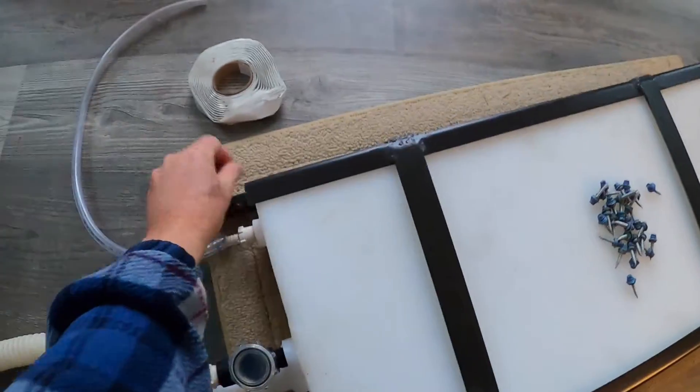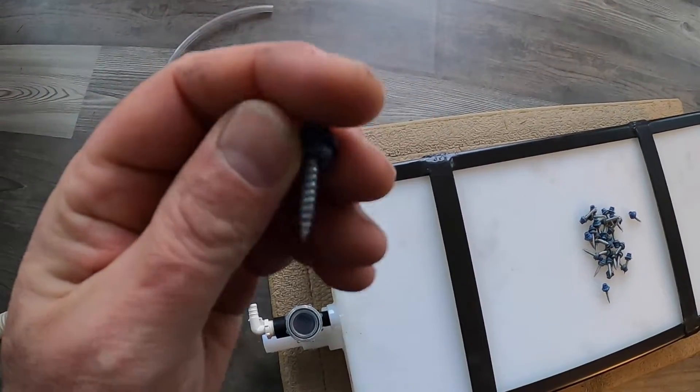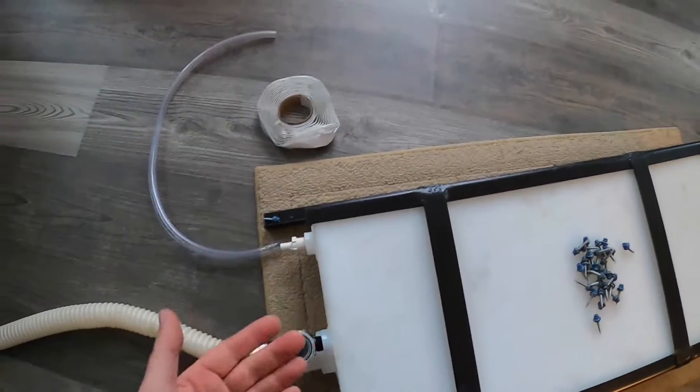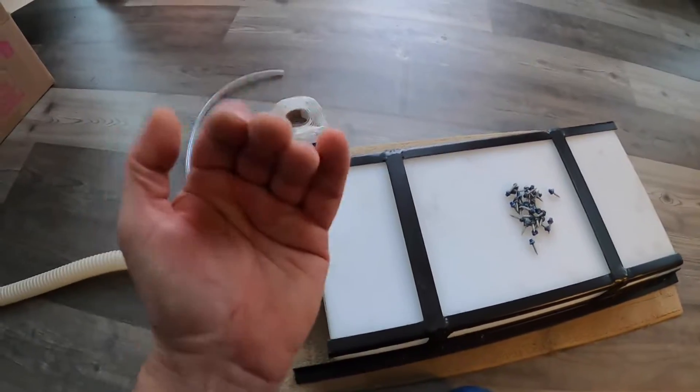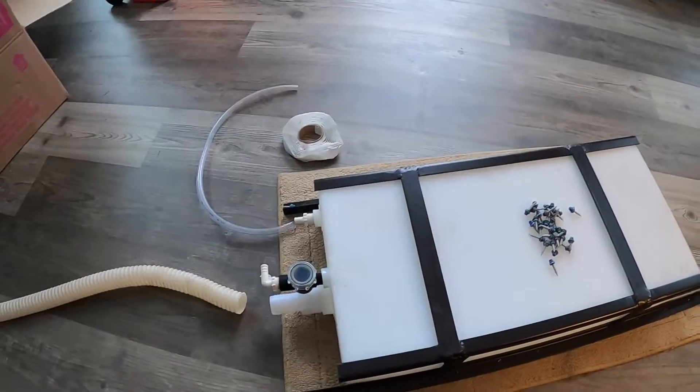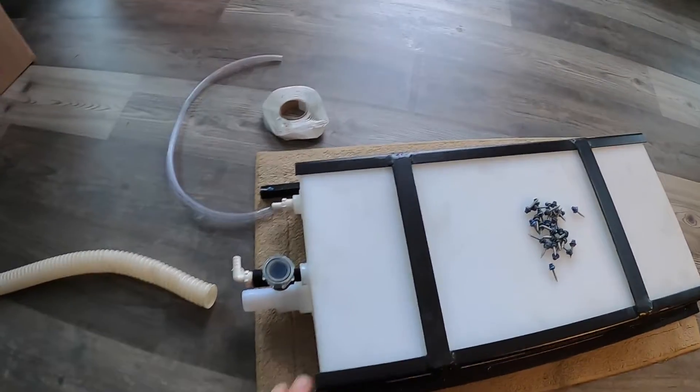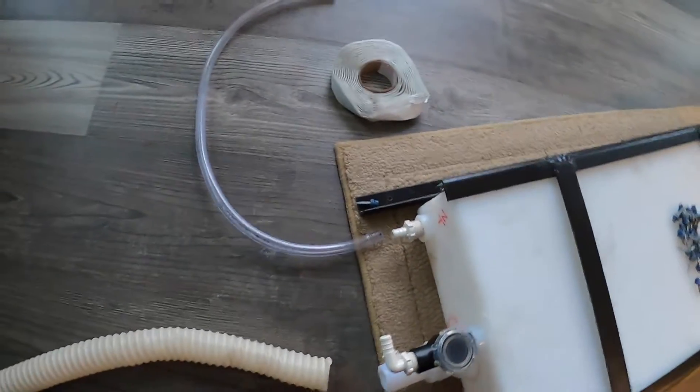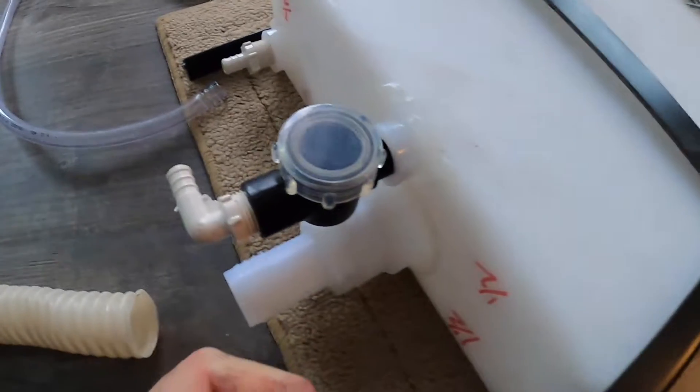Between these rubber washers and that butyl tape, that'll keep the wood that those screws are in very strong. It won't get damp and they won't pull out because the wood rots. It'll keep that completely sealed and nice and dry.